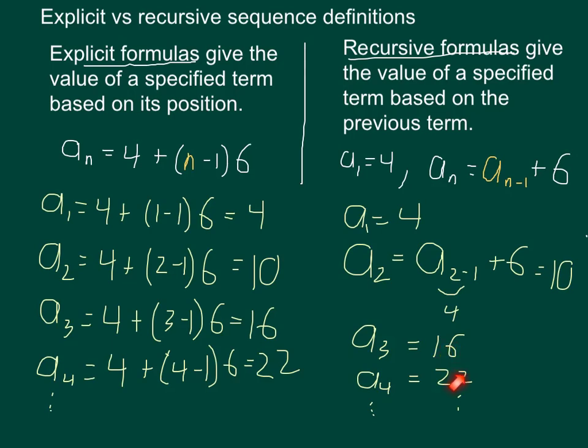So those are our two definitions. Remember, explicit formulas are based on position, based on the n, whereas recursive formulas rely on the previous term, as represented by a sub n minus 1.